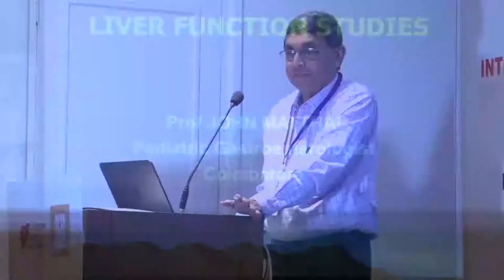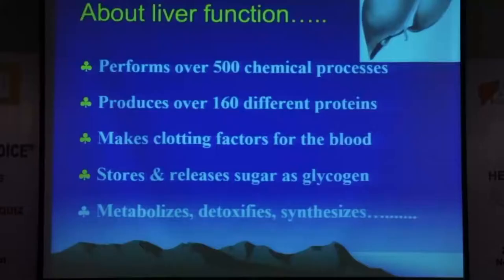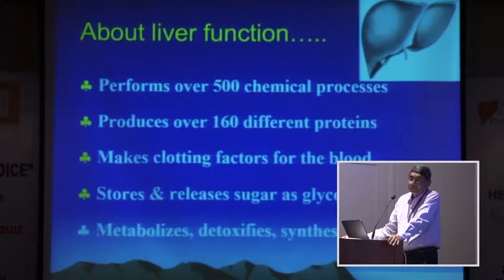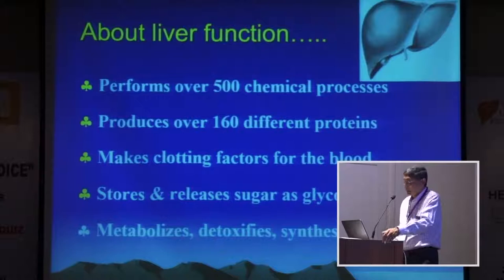This talk is on liver function tests, and I have simplified it as much as I can. About liver function: the liver performs over 500 chemical processes, produces over 160 different proteins, makes clotting factors for the blood, stores and releases sugar as glycogen, metabolizes, detoxifies, synthesizes — everything is done by the liver. That's why you can say you can live without the brain, but you can't live without the liver; it's simply impossible.